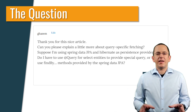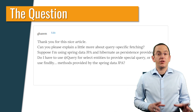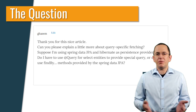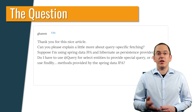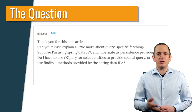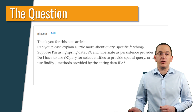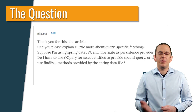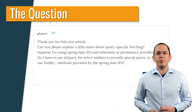He asks: Can you please explain a little more about query specific fetching? Suppose I'm using Spring Data JPA and Hibernate as my persistence provider. Do I have to use the @Query annotation to select entities and provide a specific query, or can I use findBy methods provided by the Spring Data JPA repository?